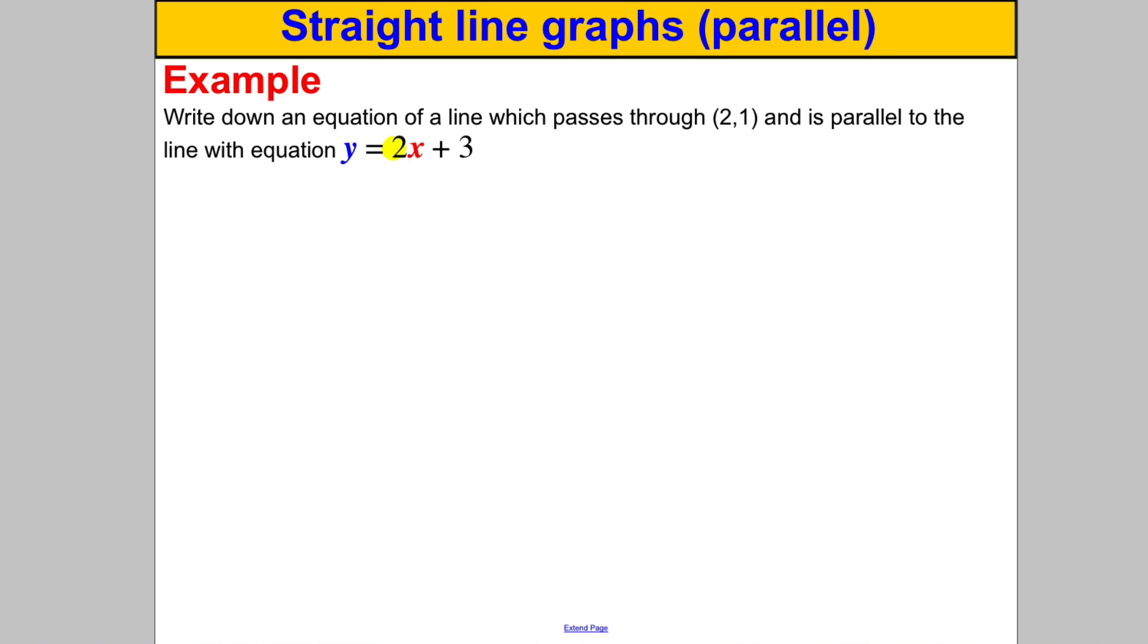So what it's telling us is it wants us to find a line that is parallel to this, so it has the same gradient as this, but it passes through this point. Now our line we're going to call our line y equals mx plus c, because we want it parallel to this we're going to want M to be 2.